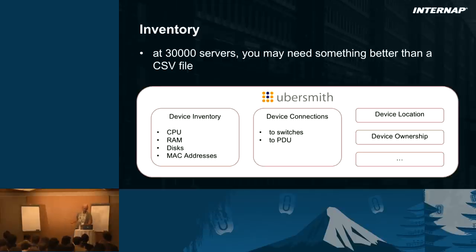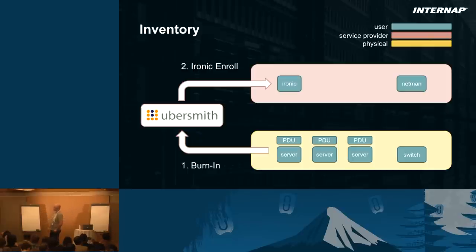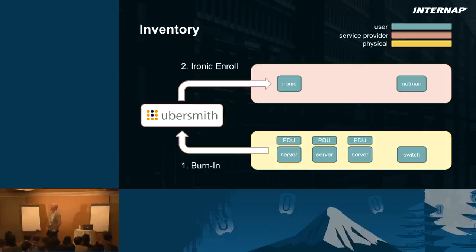Ubersmith has information about invoicing, support, and more — it's a full ERP system. Going back to the three layers: at the physical layer, any service provider will have some kind of burn-in process when provisioning a whole rack — running diagnostics, making sure everything is connected properly. This feeds Ubersmith with the actual information of what is located where. That was already happening before we wanted to use Ironic. We simply built a system that takes this information and pushes it to Ironic.